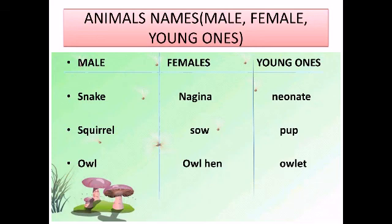The first one is snake — female: female snake, young ones: neonate. Next is squirrel — young: pup. Next is owl — female: hen, young: owlet.